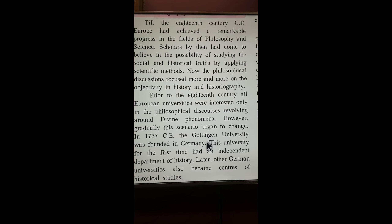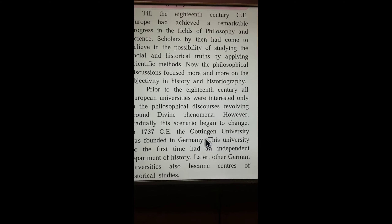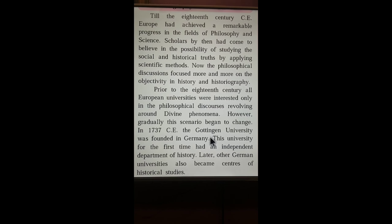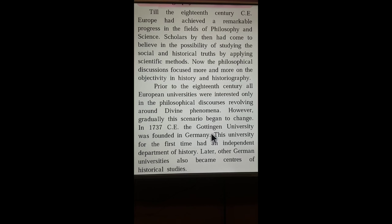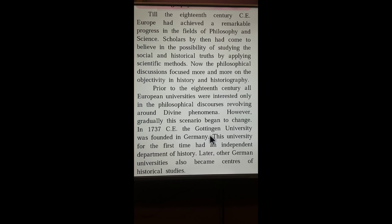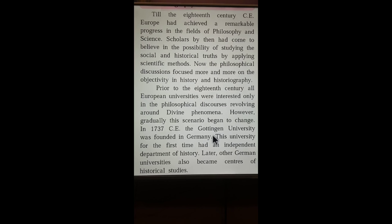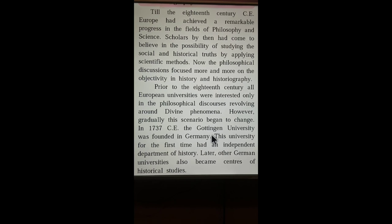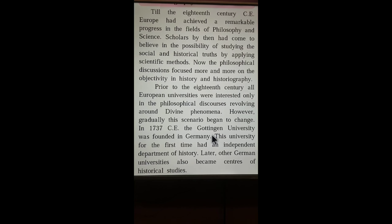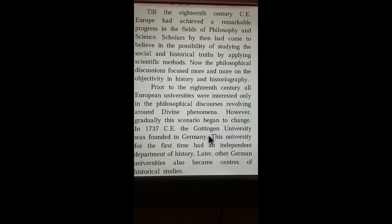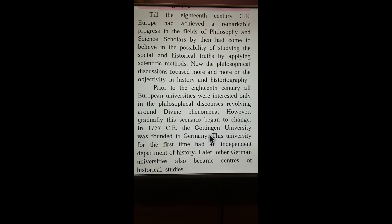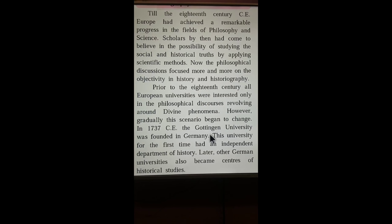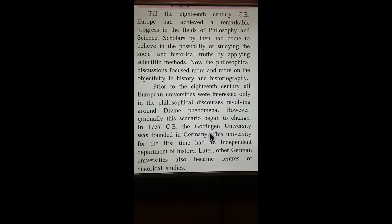Now we are going to discuss 1.3: development of scientific perspective and historiography. Till the 18th century CE, Europe had achieved remarkable progress in the field of philosophy and science. You can trace this back to the 17th century where England had already begun the industrial revolution. Scholars by then had come to believe in the possibility of studying social and historical truths by applying scientific methods.